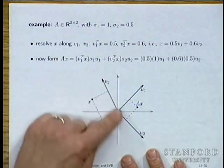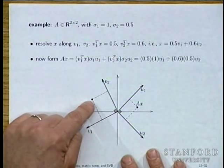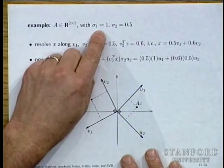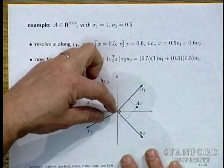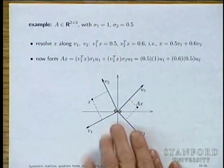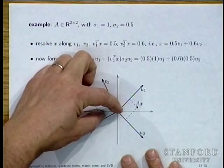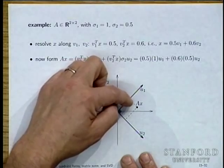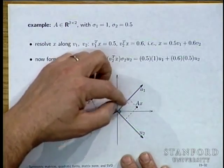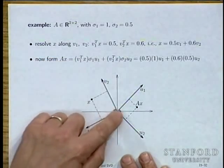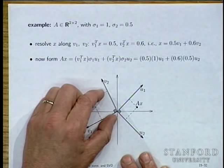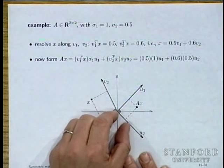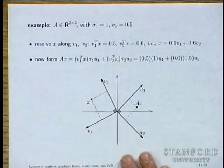You resolve input x into its components along V₁ and V₂. The component along V₁ gets multiplied by σ₁ = 1 and comes out along U₁. If that component is about 0.55, you get 0.55 U₁. The component along V₂ — say 0.7 V₂ — gets scrunched by 0.5 to give 0.35 in the U₂ direction. That's the output.